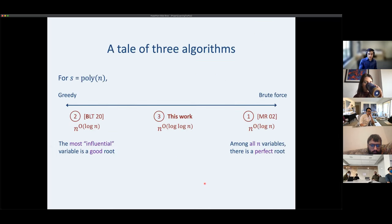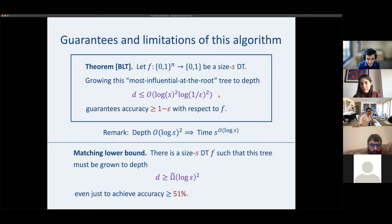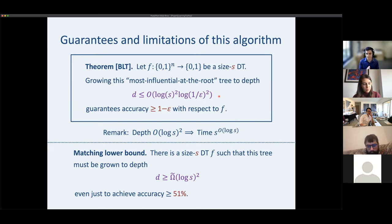We have two taglines: among all n variables, there is a perfect root; and the most influential variable is a good root. There's an obvious thing to try: look at some small set of the most influential variables and try those. We'll show that among the poly-log-s most influential — a quite small set — there is a really great root, essentially as good as MR's.